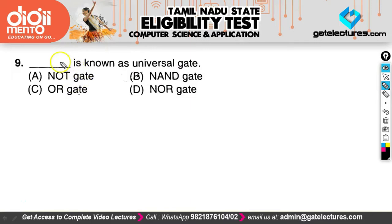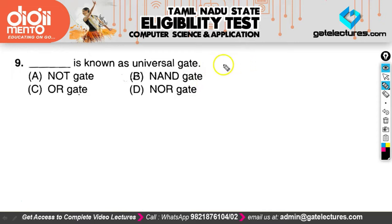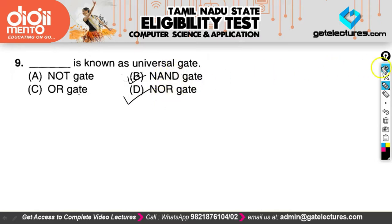The next question asks what is known as a universal gate. A universal gate is a gate which can implement any boolean function without needing to use any other gate — meaning just by using that gate we can implement AND, XOR, XNOR, and everything. The answers are NAND and NOR; both are universal gates, so two options are correct for this question.